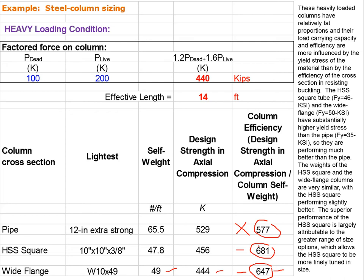We see a phenomenon that's actually quite common: more heavily loaded members — and this applies not just to columns but to trusses as well, since trusses have axially loaded members with some resemblance to columns — the more heavily loaded the member, the more structurally efficient it's going to be. That's because it takes on fat proportions and tends to be less vulnerable to buckling.